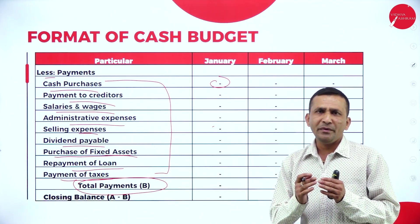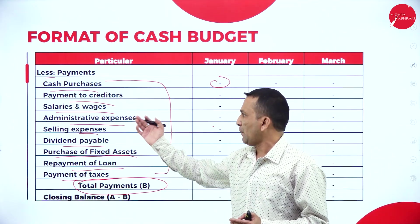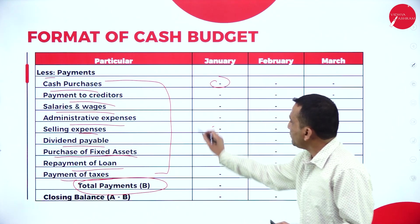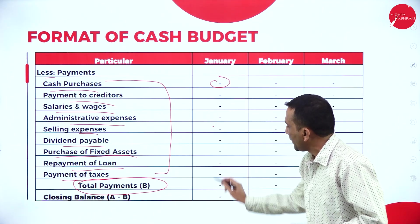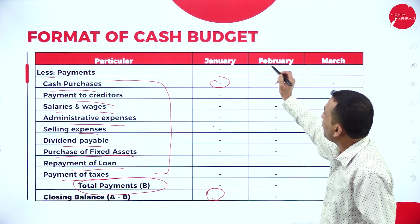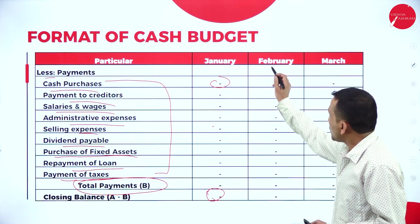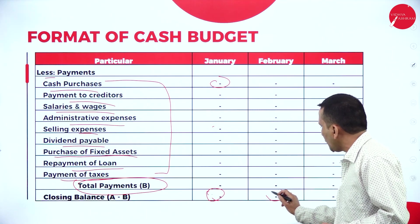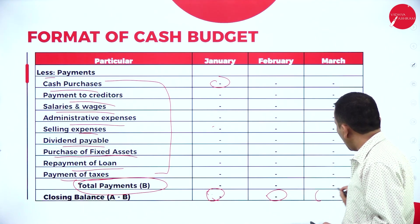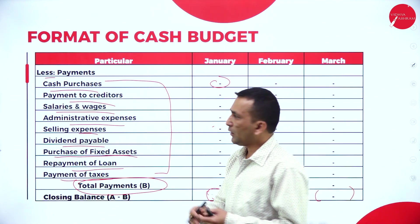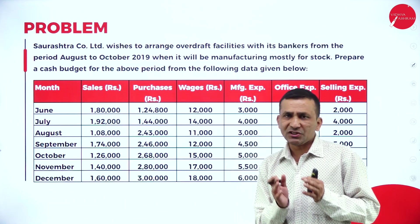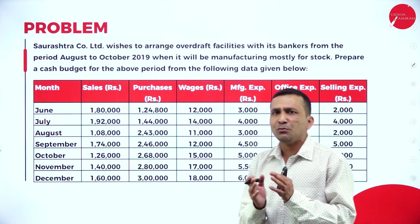The formula is: opening balance plus receipts less payments equals the closing balance. When preparing January, whatever negative or positive balance results, it carries forward to the next month as the opening balance. So for each month you carry forward — either negative or positive — and only at the end of the month can we decide. Moving on, there is a question to understand this more clearly.